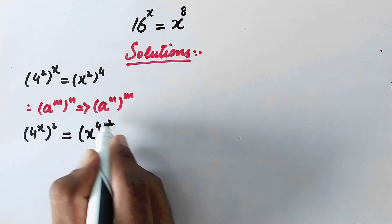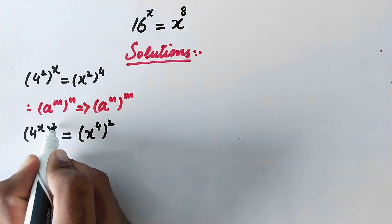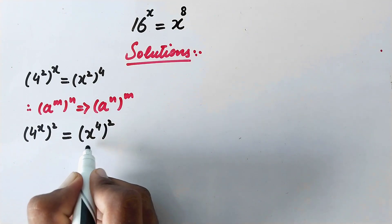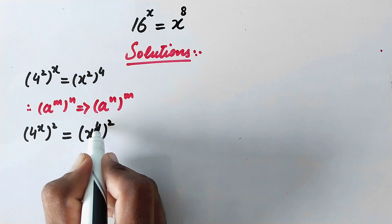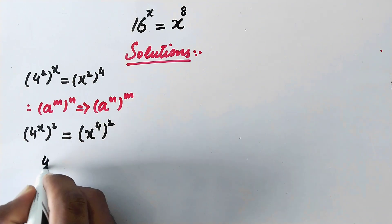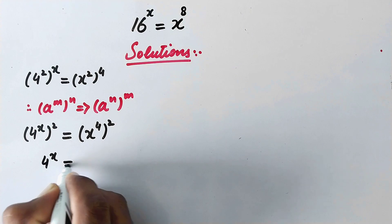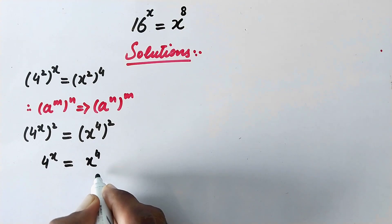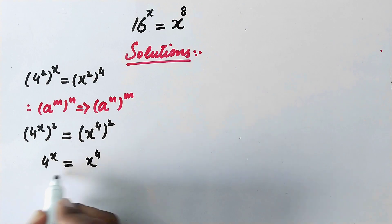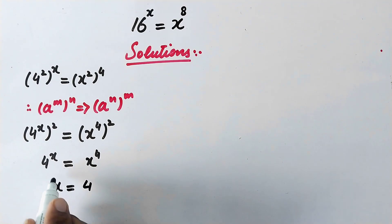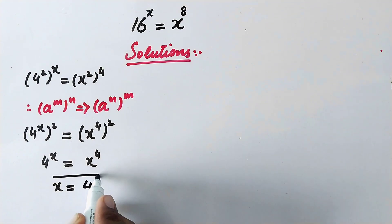Now we can see that the powers on both sides are equal, so we can compare the bases. Here we get 4 raised to power x is equal to x raised to power 4. And now by comparing, we can write x is equal to 4. That is the value of x.